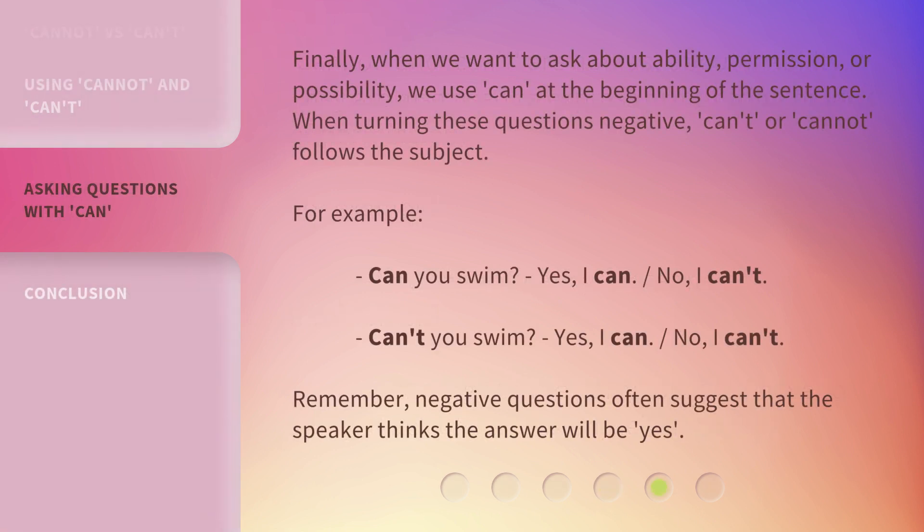Finally, when we want to ask about ability, permission, or possibility, we use 'can' at the beginning of the sentence. When turning these questions negative, 'can't' or 'cannot' follows the subject. For example: 'Can you swim?' — 'Yes, I can' / 'No, I can't.' 'Can't you swim?' — 'Yes, I can' / 'No, I can't.' Remember, negative questions often suggest that the speaker thinks the answer will be yes.